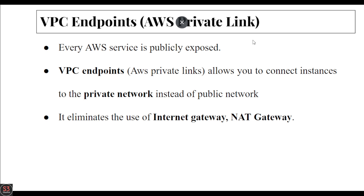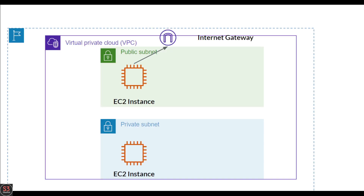A VPC endpoint, also called AWS PrivateLink, allows you to connect instances to AWS services using a private network instead of the public internet. It eliminates the use of internet gateway and NAT gateway. Whenever we create a VPC endpoint we don't need any internet gateway or NAT gateway — we just create the VPC endpoint and we are able to access all AWS services like CloudWatch and S3 bucket through our private instance.